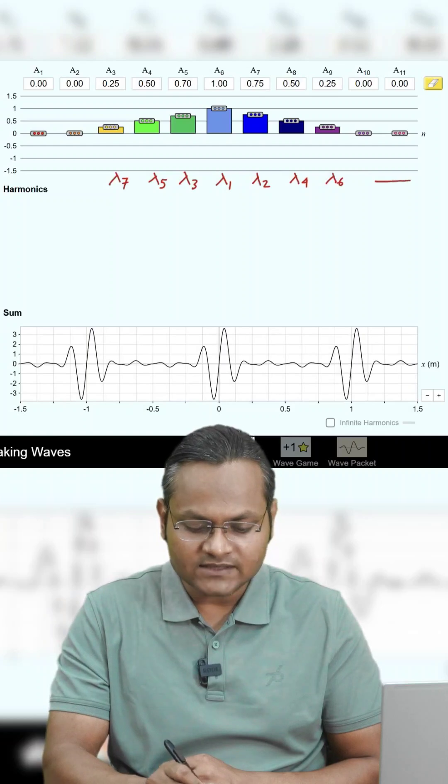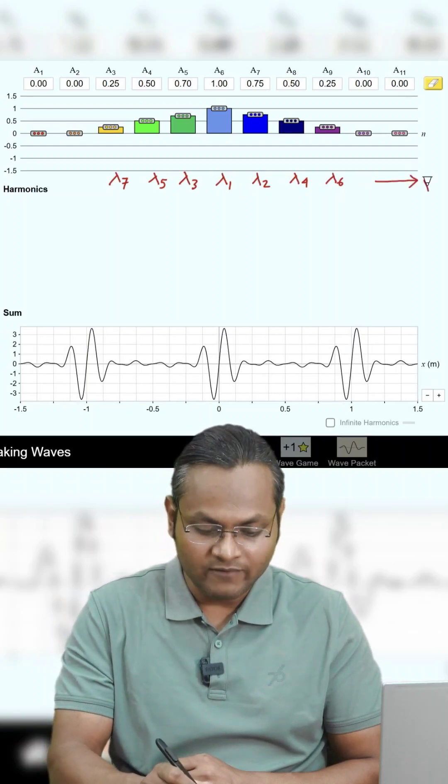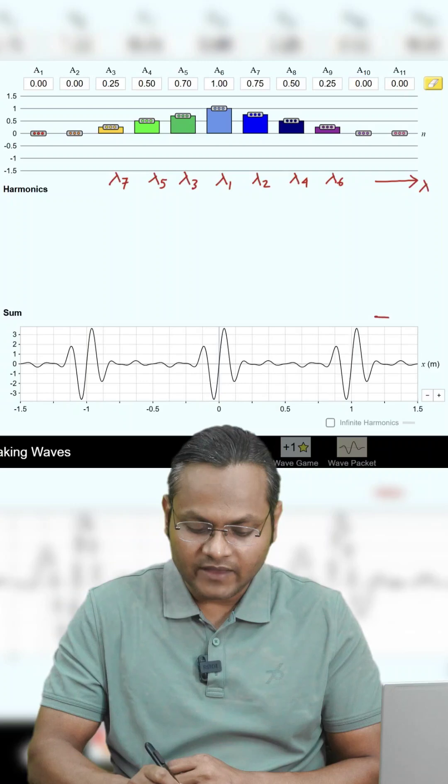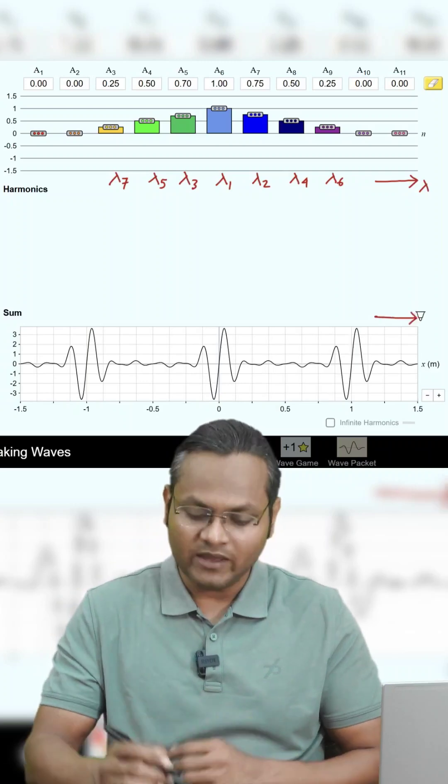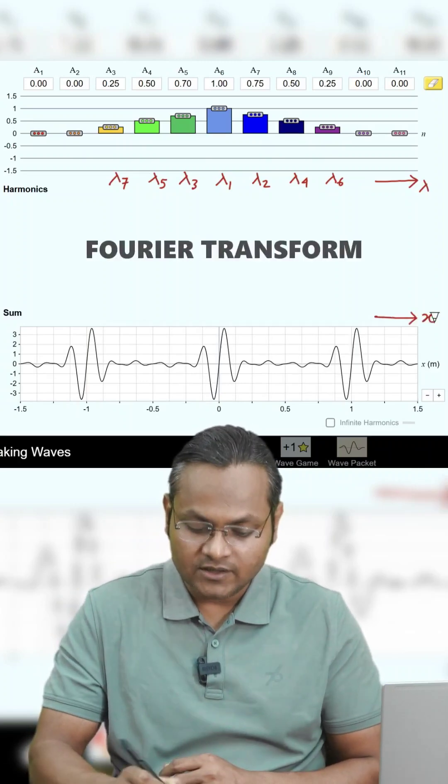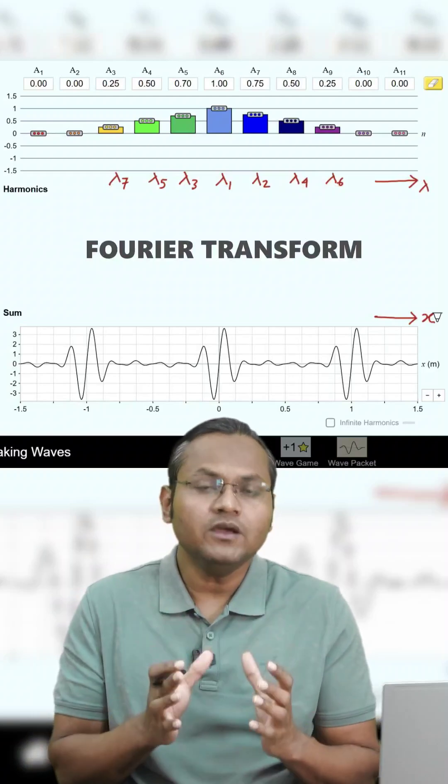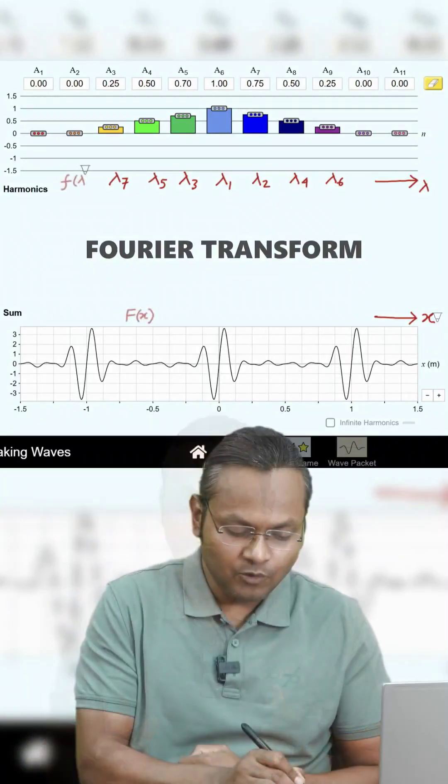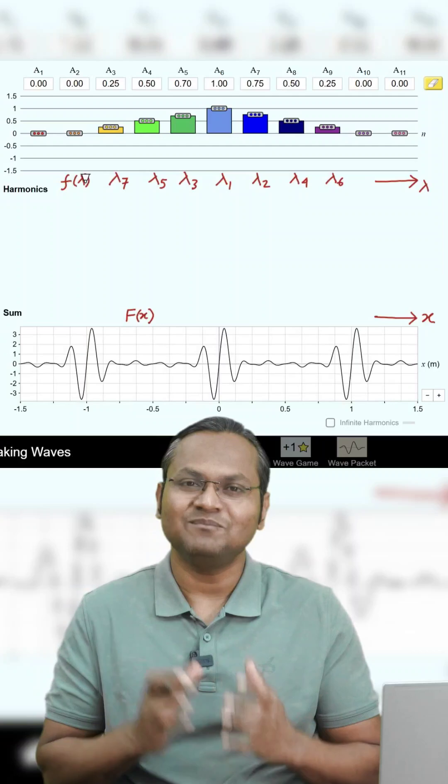So essentially, the first graph is a distribution of wavelengths and the second graph is the distribution of all these wavelengths in position space. इसी को फूरियर ट्रांस्फॉर्म कहते हैं.